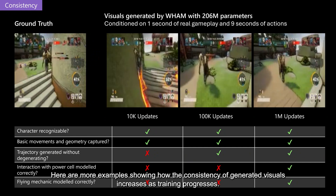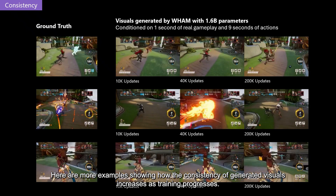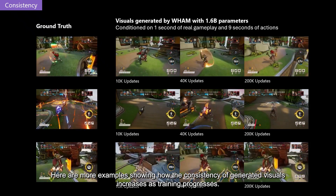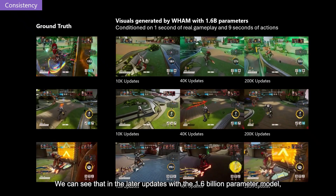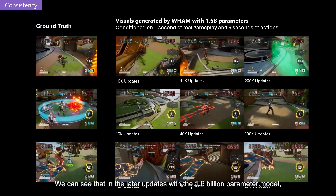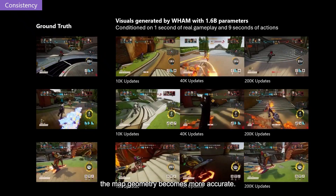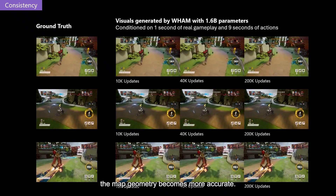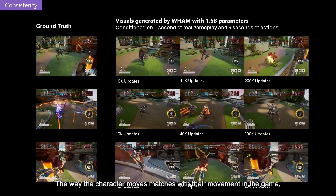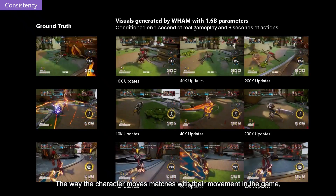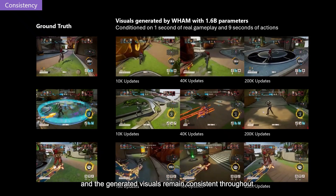Here are more examples showing how the consistency of generated visuals increases as training progresses. We can see that in the later updates with the 1.6 billion parameter model, the map geometry becomes more accurate, the way the character moves matches with their movement in the game, and the generated visuals remain consistent throughout.